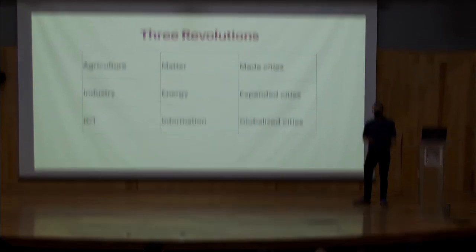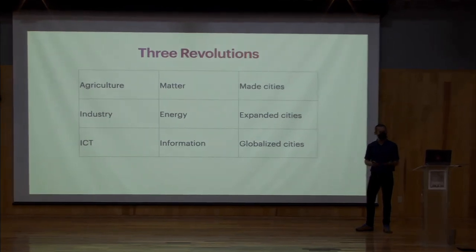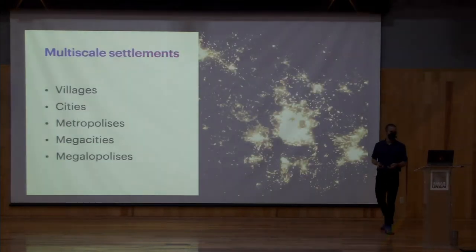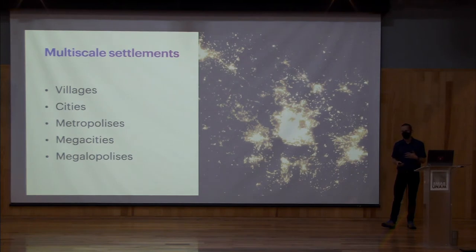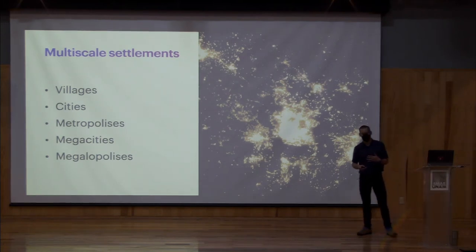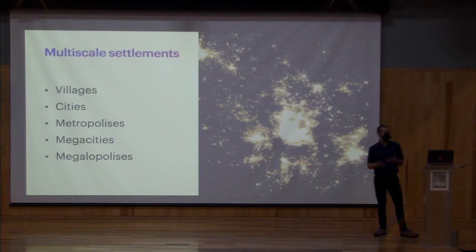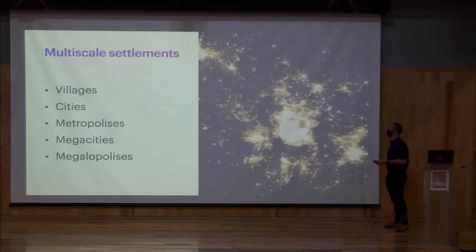The first revolution made it possible to go from a nomadic lifestyle to sedentary living, enabling the first villages and cities. The industrial revolution allowed cities to grow to sizes not possible with agriculture alone. With information, we're now having globalized cities. We can see an evolution of settlements: villages with less than 10,000 people, cities up to a million, metropolises with regional influence, megacities with more than 10 million inhabitants, and megalopolises.